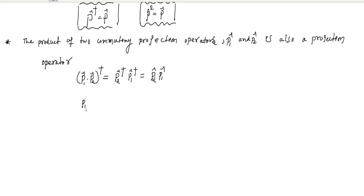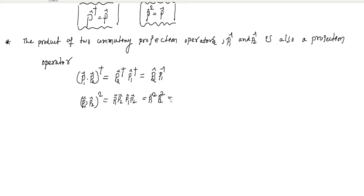Next, (P₁·P₂)² equals P₁·P₂·P₁·P₂. Since P₁ and P₂ commute, this rearranges to P₁²·P₂², which equals P₁·P₂. So the product of two commuting projection operators is indeed a projection operator.